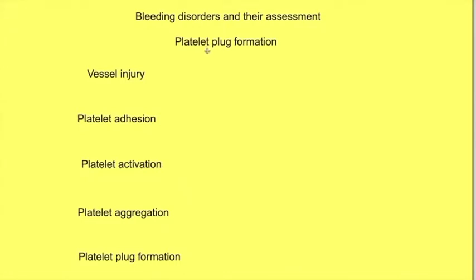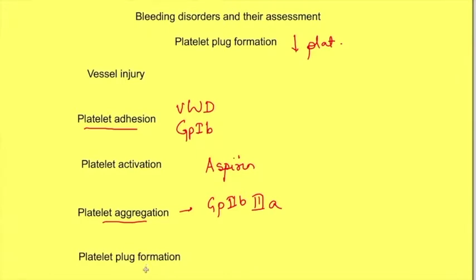If there is any problem in platelet plug formation, that will also lead to bleeding disorders. Some causes include decreased platelet count, problems with platelet adhesion even if count is normal, for example in von Willebrand disease and GP1B receptor problems, problems with platelet aggregation like GP2B3A receptor issues, and even aspirin overdose. Aspirin inhibits thromboxane which is important for platelet activation and aggregation.